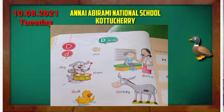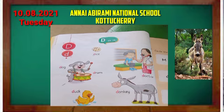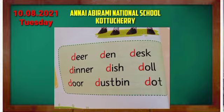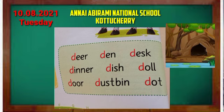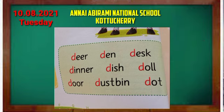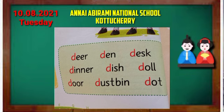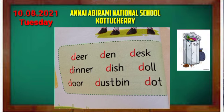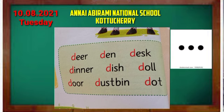See this next image — this is duck. D-U-C-K. Duck. Then the last image is donkey. The donkey spelling is D-O-N-K-E-Y. Donkey. So look at the bottom of the page — some D words are there. The first word is deer. D-E-E-R. Deer. Den. D-E-N. Den. Desk. D-E-S-K. Desk. Dinner. D-I-N-N-E-R. Dinner. Dish. D-I-S-H. Dish. Doll. D-O-L-L. Door. D-O-O-R. Door. Then dustbin. D-U-S-T-B-I-N. Dustbin. Dot. D-O-T. Dot.